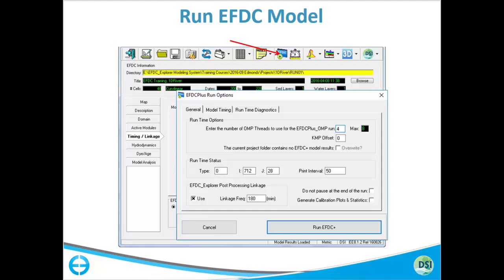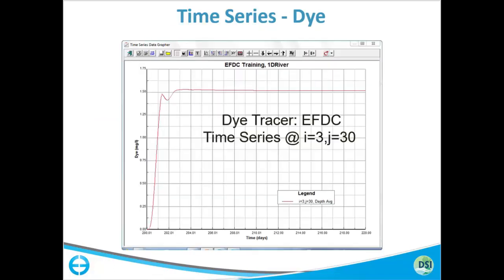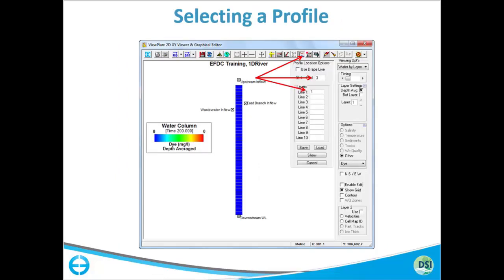This is a typical executable screen you will see when running your EFDC model. There is a column showing values for each output variable: time in days, time step, and output for one particular cell specified by I and J. You can change the runtime I and J in EFDC Explorer to see what changes are occurring on a particular cell, and all those results correspond to that cell.